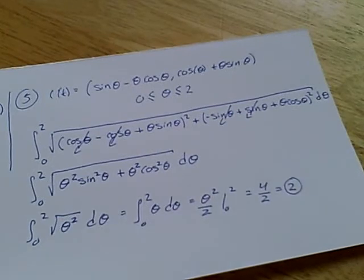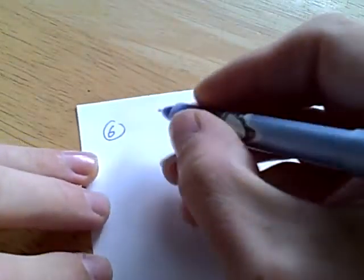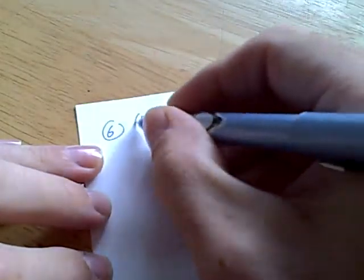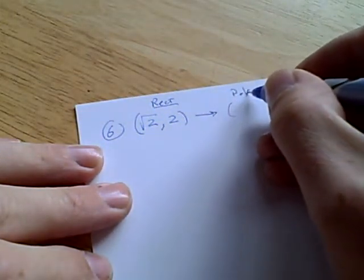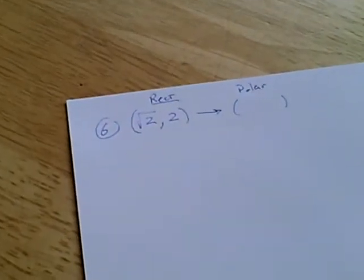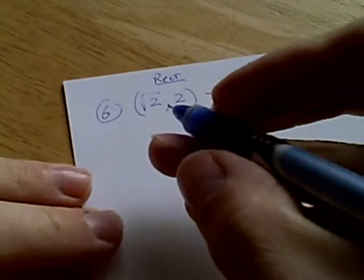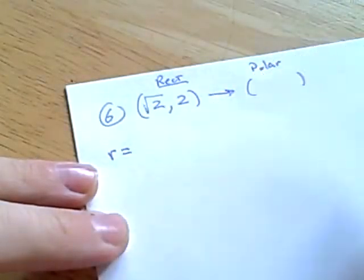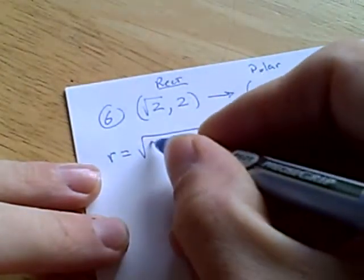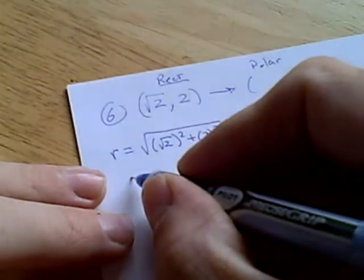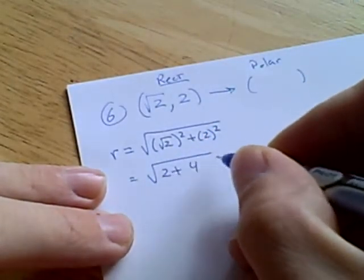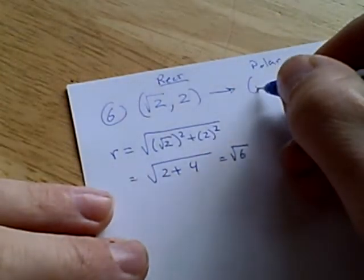Alright. So now let's go ahead and look at number 6. Number 6. We're taking a point in rectangular coordinates, root 2, comma 2. And we're converting it to polar coordinates. Let's zoom back in a little bit. So what we need is, first we need r. And r is going to be the square root of the sum of the squares. So that's going to equal 2 plus 4. Or root 6. So there's part of it.